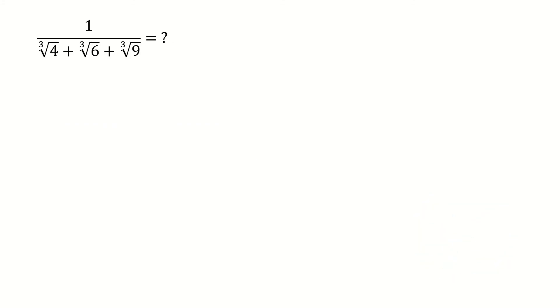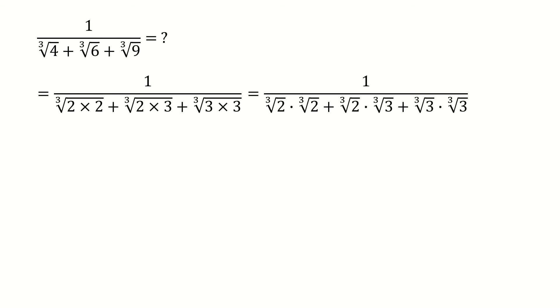So for this problem, we have to solve two difficulties. The first one is, we have to deal with three terms in the denominator. And the second difficulty is to deal with the cubic root here, not square root anymore. So how to do that? First, we observe that 4 equals to 2 times 2, 6 equals to 2 times 3, and 9 equals to 3 times 3. Further, we can put them in this way. So can you find some hint from here?